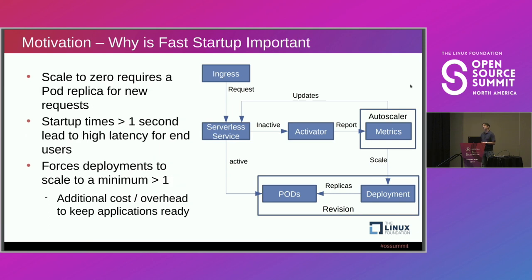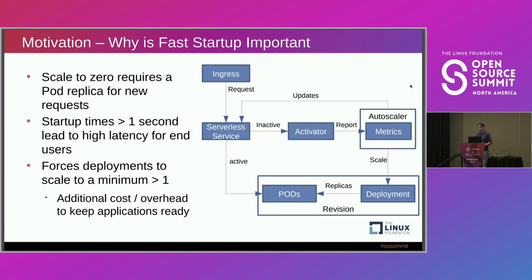The advantage of going down to zero instances is you don't incur the cost of always keeping one instance ready to serve. But this is where fast startup becomes vitally important — things approaching a second to start will cause high latency for users. This forces deployments to maintain a minimum number of instances even when there's no traffic, which is additional cost for something not doing any work.